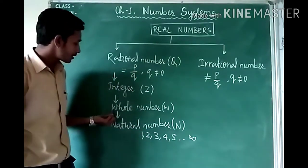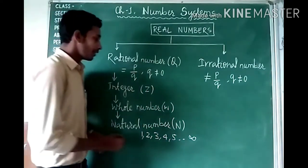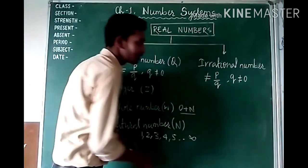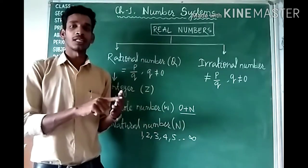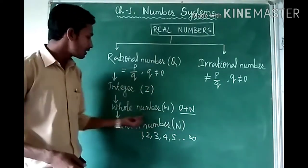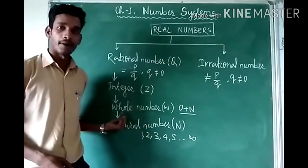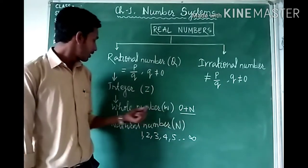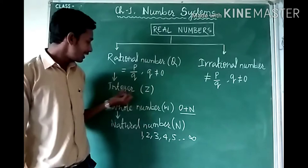Next, we will discuss whole numbers. Whole numbers — if we add 0 with natural numbers, that means we include 0, 1, 2, 3, 4, 5, 6, 7, up to positive infinity. All these numbers are called whole numbers, and we denote them by capital W.